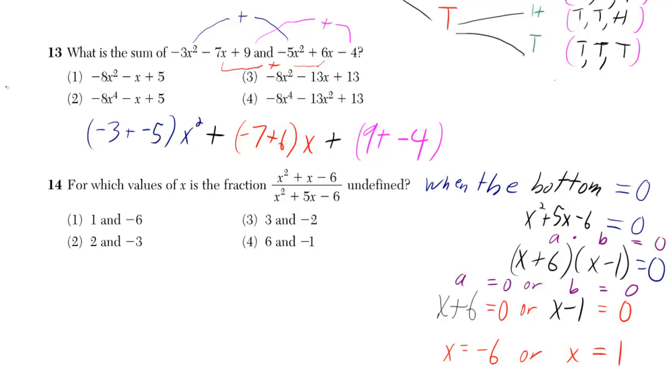Now if you add up negative 3 and negative 5 you get negative 8x squared. If you add up negative 7 and 6 you get negative 1x. If you add up 9 and negative 4 you get 5, and we are supposed to be adding in between.